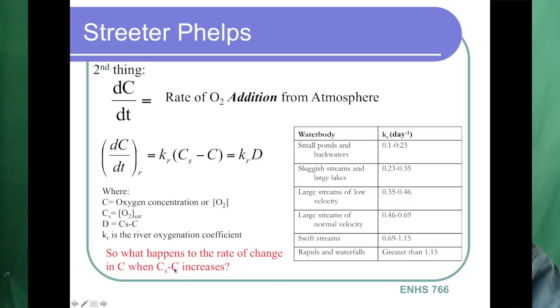So if your actual concentration of O2 in the water is very close to your saturated condition, you're not going to have much of a driving force. But if your actual concentration of DO is very low versus your saturated condition, then there's a big driving force, and then you will actually see the rate of aeration will increase. This constant KR is measured in terms of per day, and you can see some of these values over here.